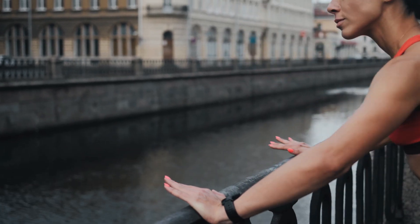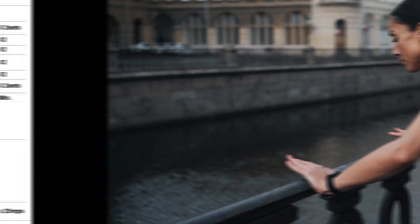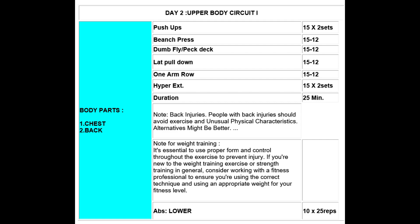So let's start with the basic chart — Circuit 1, Day 2 upper body exercise, body parts chest and back. This is a 3 to 4 week exercise schedule, and you have to follow Circuit 1 for 3 to 4 weeks. As your strength increases, you have to follow Circuit 2 — another schedule. You have to change your schedule and add some exercises every month.